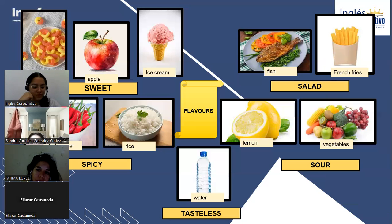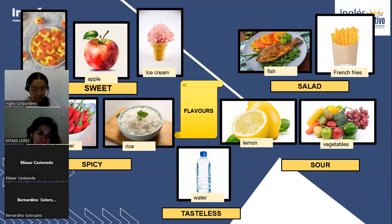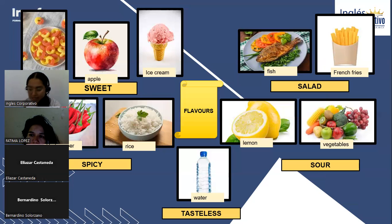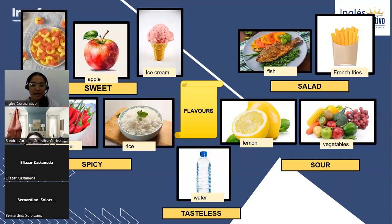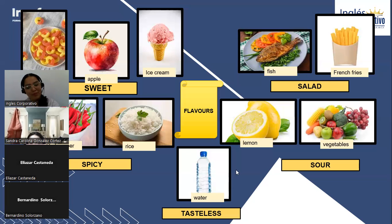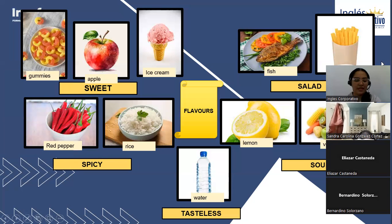What else can be salty? Fish, French fries, meat, chicken — perfect. What can be sour? Orange, kiwi sometimes, green apple — thank you! And tasteless — just water mainly. Sometimes pacaya is tasteless; it doesn't have much flavor. But if you add lemon, it becomes sour! Thank you all for your examples.